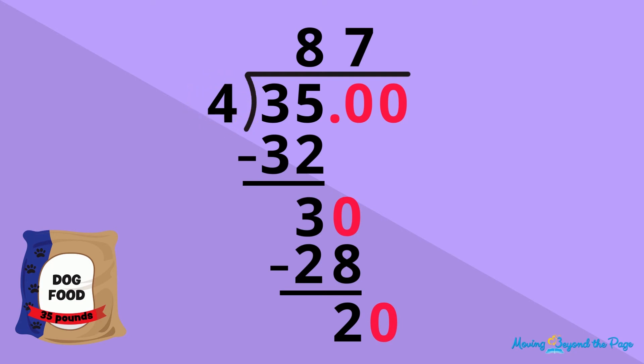4 divides evenly into 20, so there is no remainder and we don't have to add any more zeros. After dividing to the point where there are no more remainders, be sure to put the decimal point in the quotient directly above where it is in the dividend.